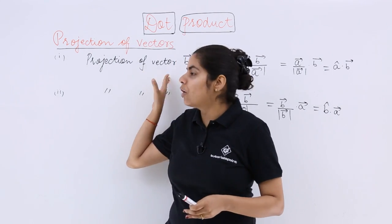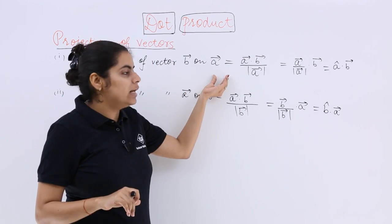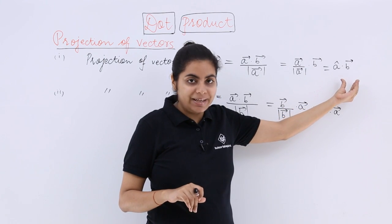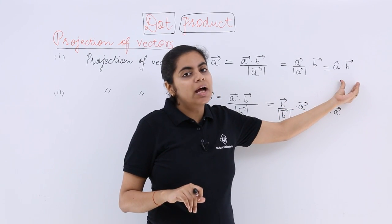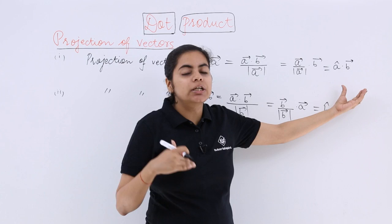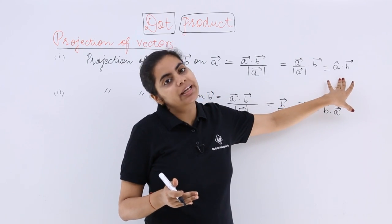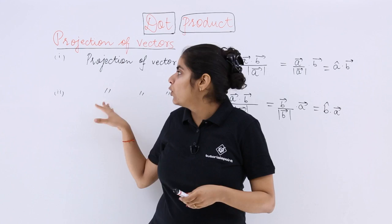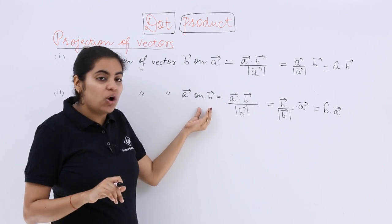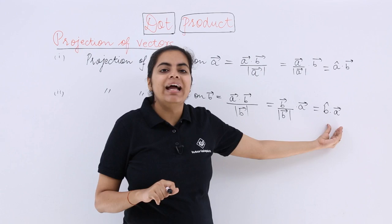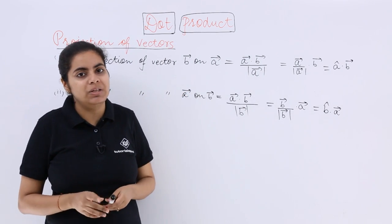I will define the projection of vector B on A as the dot product of vector B with the unit vector along A. Similarly, the projection of vector A on B is the dot product of vector A and the unit vector along B.